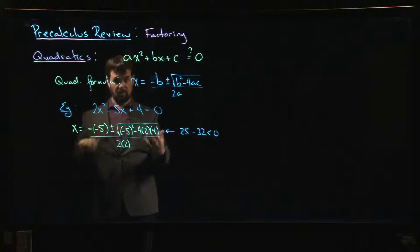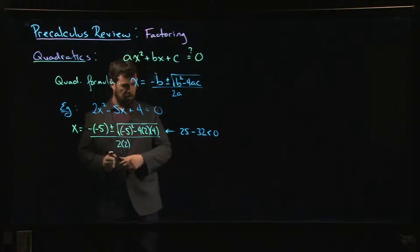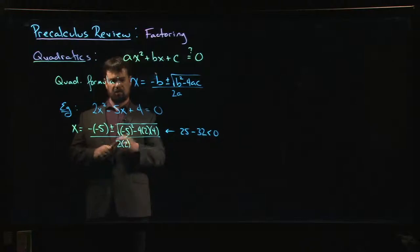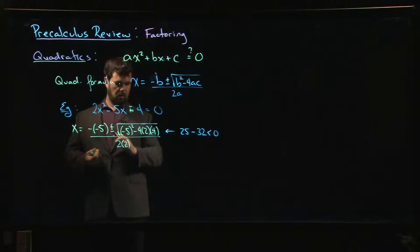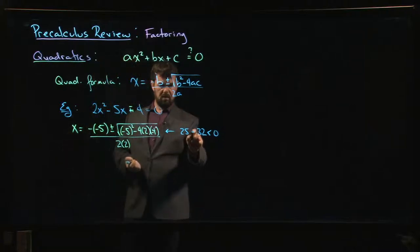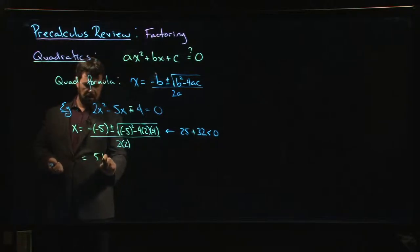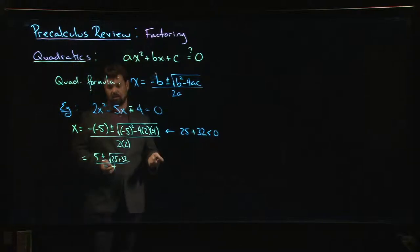The factor theorem tells you that if there are no solutions, there are no factors. Another case where you might need the quadratic formula is if that plus 4 were actually minus 4. Now you'd be computing 25 plus 32, so you'd have 5 plus or minus the square root of 57 over 4. There's not a lot of simplifying you're going to be able to do here.